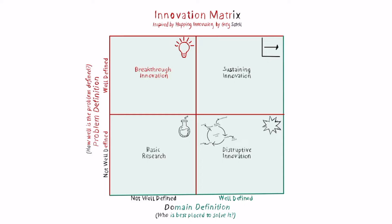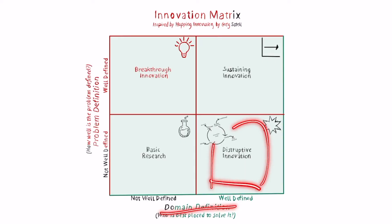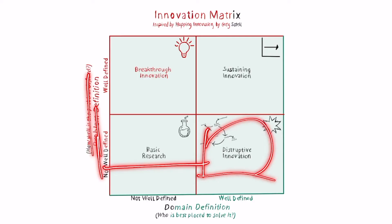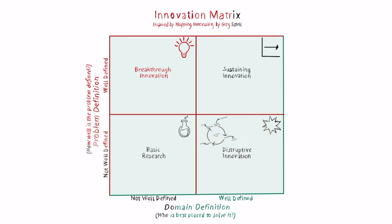Another case is disruptive innovation, where the domain is well defined — so it may be relatively easy to find the skills needed — but the problem is not yet defined. There is a lot of ambiguity around the problem, and therefore this kind of innovation is very hard to predict. It's even harder to understand whether it will solve a problem that the market actually cares about in the long run.